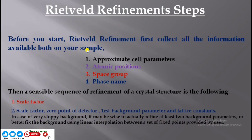The information you need to collect includes: Lattice Parameters and Angles, Atomic Position, Space Group, and Phase Name, which means Crystal System.